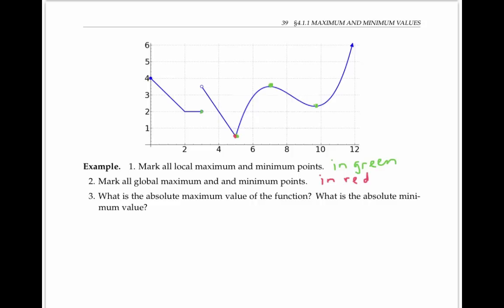That point is as low or lower than any point in an open interval, and the function is defined in an open interval around three, even though it's discontinuous there. In fact, this point is tied for local minimum with all the points on the interval between two and three — they're all as low or lower than all points in an open interval around them. The point (0, 4) doesn't count as a local max because the function is not defined on the other side of zero, so there's no open interval to consider. This point is also not an absolute maximum because the function gets higher over here, and as long as this trend continues, f of x has no absolute maximum value at all, because its values just keep getting higher as x goes to infinity.